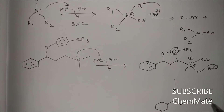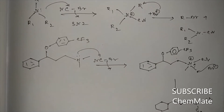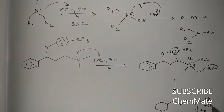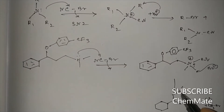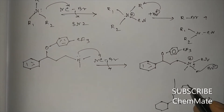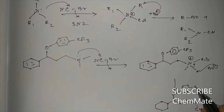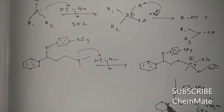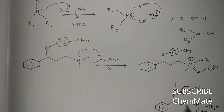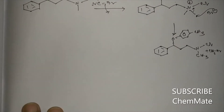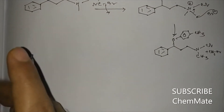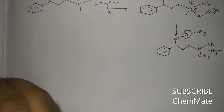The product will be N-CN-CH3 (a cyanamide with one methyl on nitrogen) plus CH3Br as the alkyl bromide. The other group N-CN-CH3 with the CF3 fragment will be the cyanamide product.